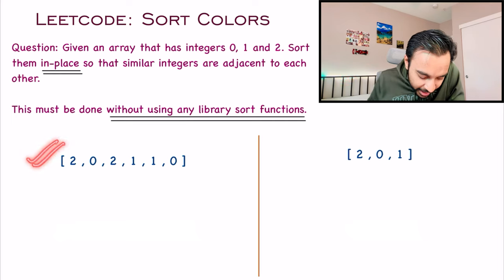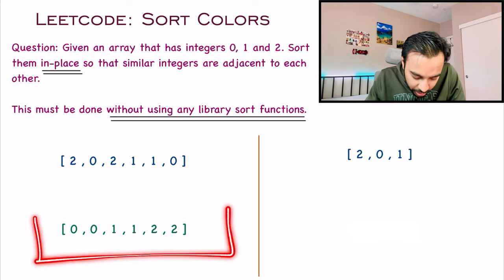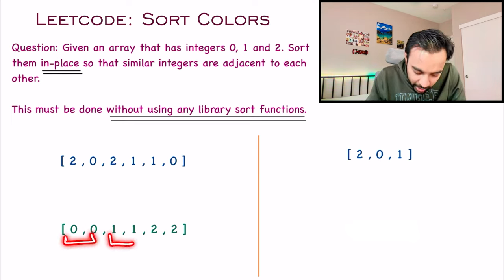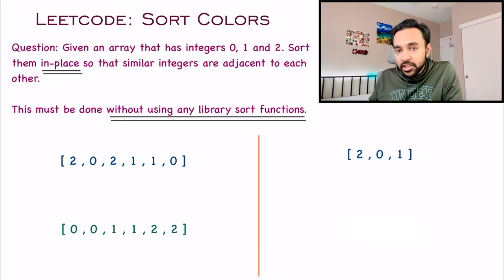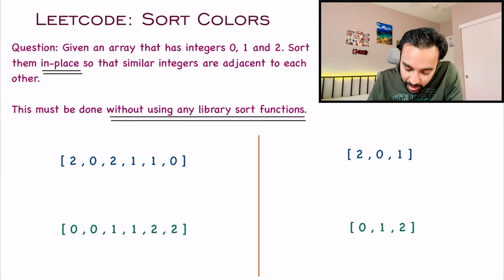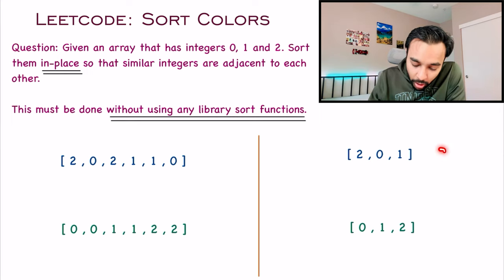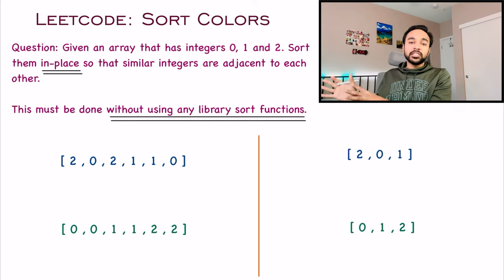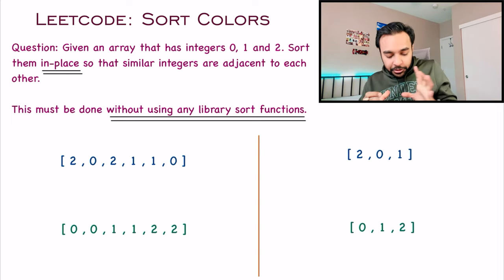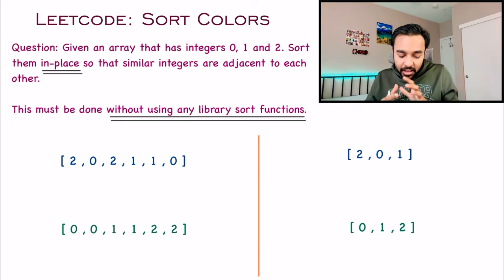Let us look at some sample test cases. In the first test case, there is an array with six elements. If you group all the zeros, ones, and twos together, the resultant array has all zeros together, all ones together, and all twos together. Similarly, in the second test case with three elements, you get a zero, one, and two. Note that it is not necessary your array will have all three elements — you can also have an array with just zeros and ones.